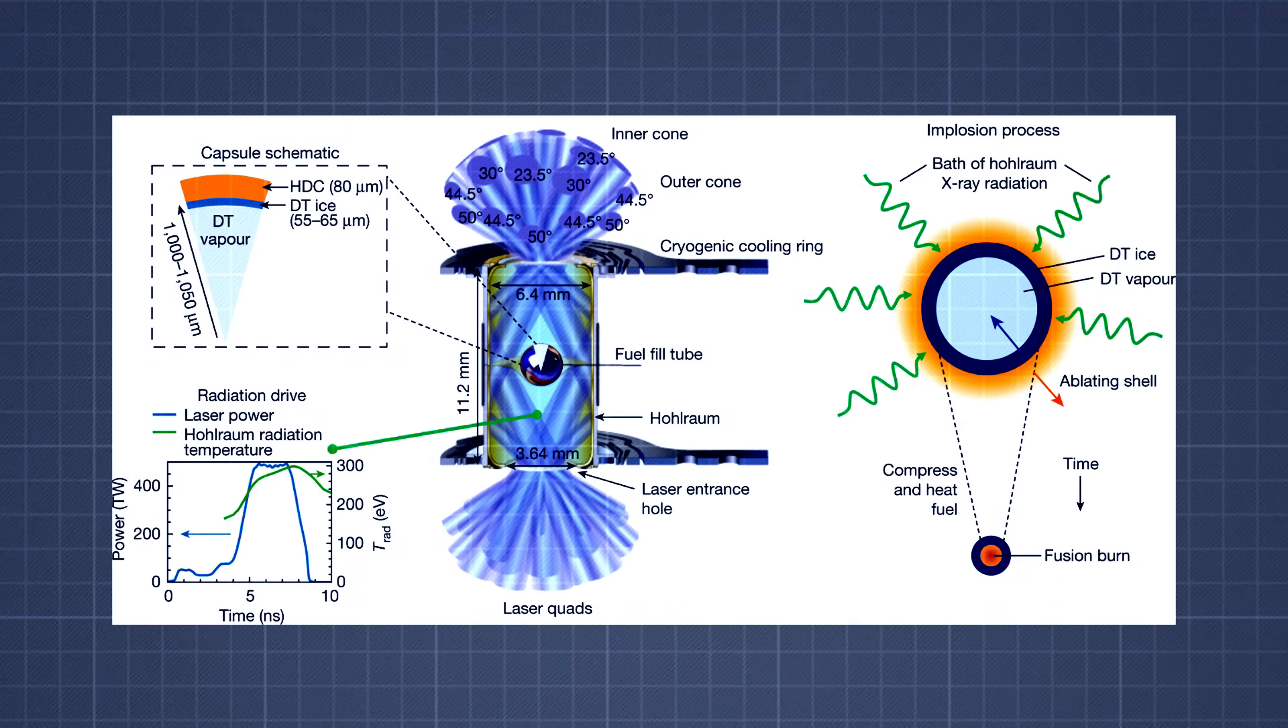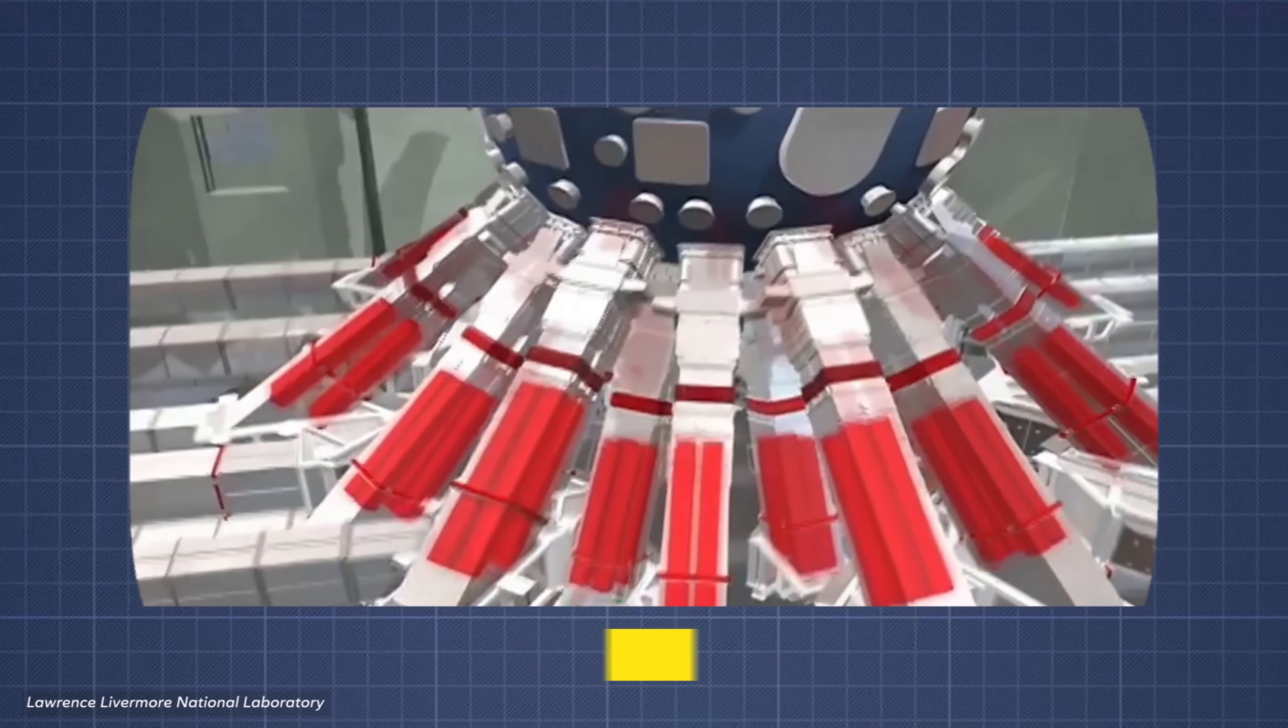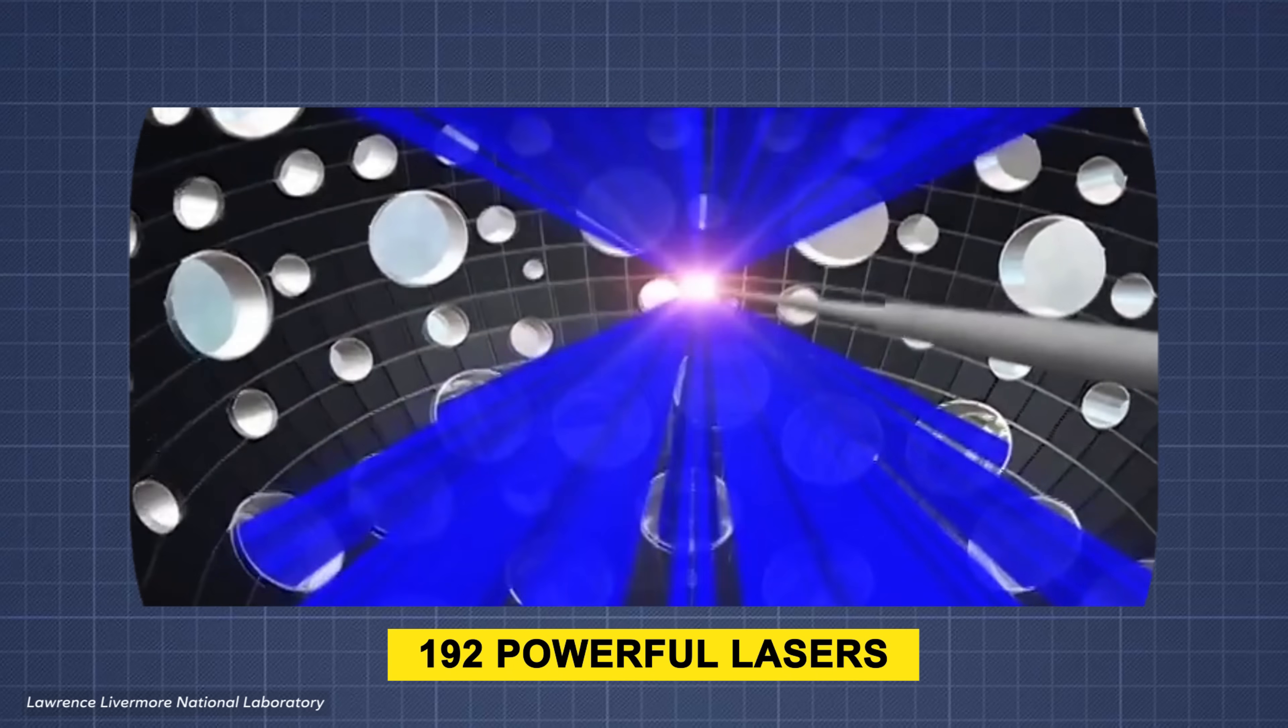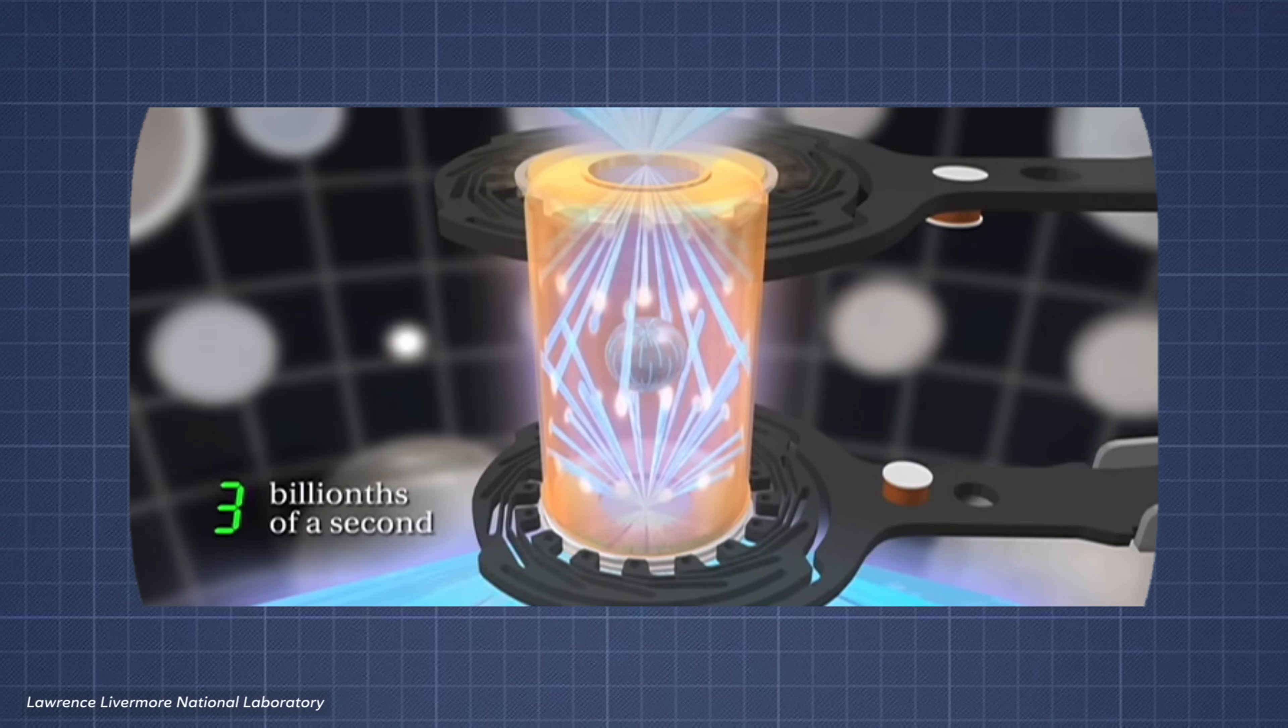Its goal was to test a different fusion method: inertial confinement fusion. Instead of magnets, NIF uses 192 powerful lasers to blast a tiny fuel pellet all at once. The idea is to compress it so fast and so evenly that the atoms inside slam together and fuse.